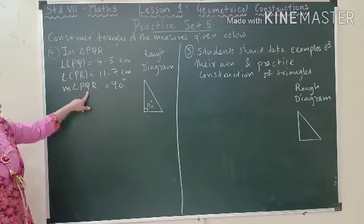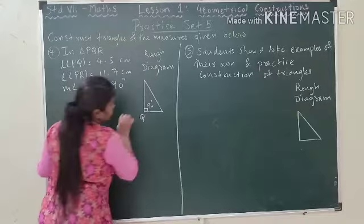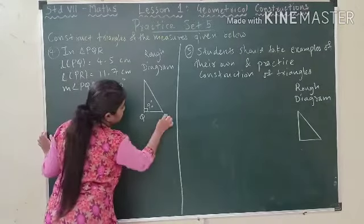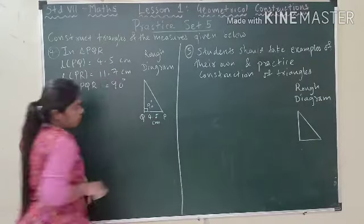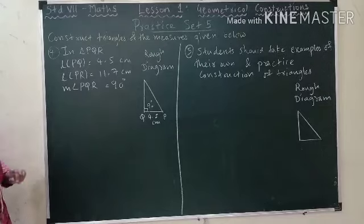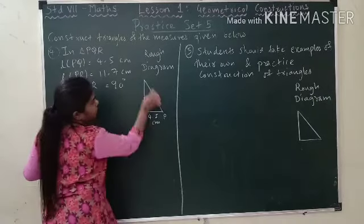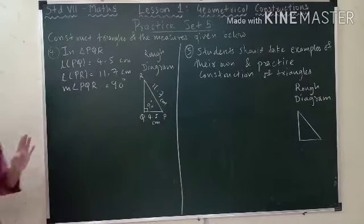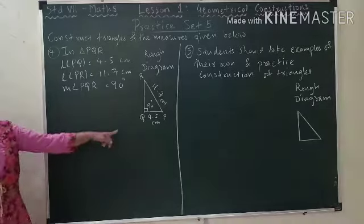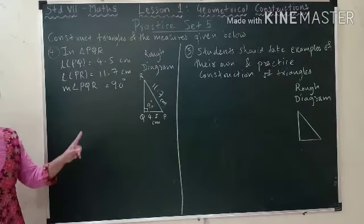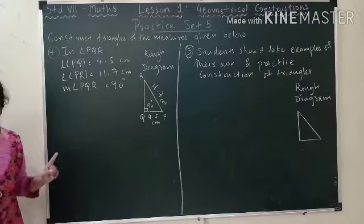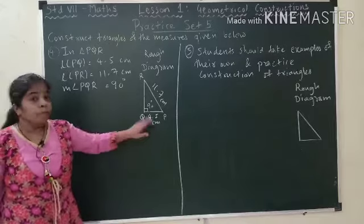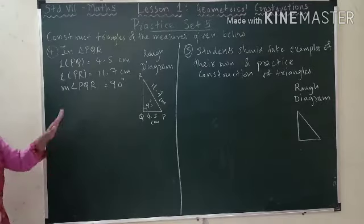Now we will start with the fair diagram. Before that we will have to write the markings in rough. This will be 90. Measure of angle PQR means Q is 90 degrees. Q is 90 degrees. I will take PQ 4.5 cm and PR 11.7. When you are writing the measures, you have to see the alphabets very carefully, where you are placing them in your rough diagram. That's very important because based on this we are going to draw our fair diagram, so this should be perfect. Let's begin with the base now.